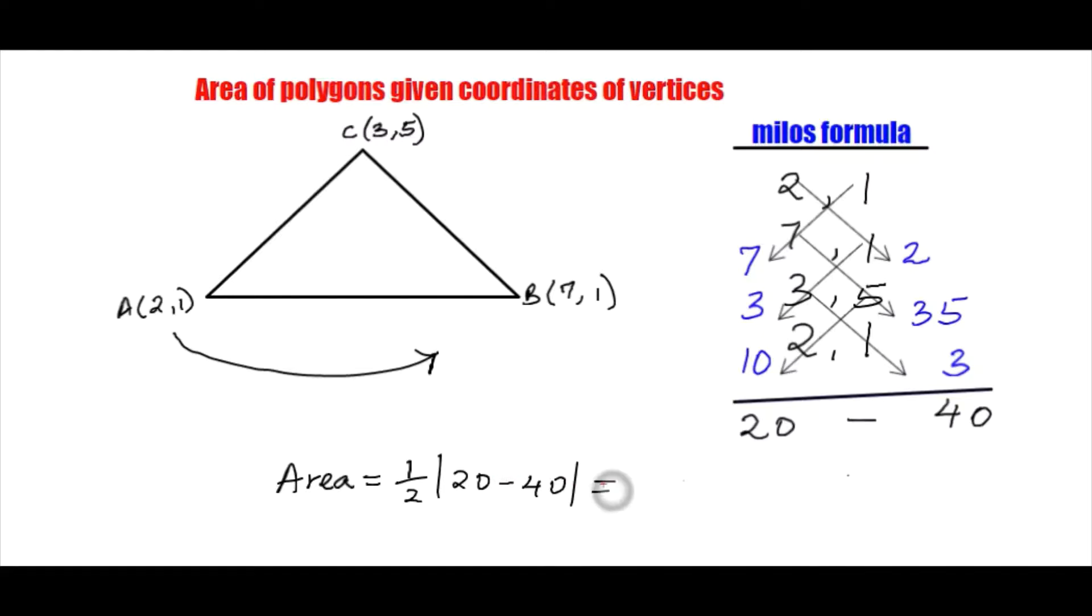So by absolute we mean that we shall ignore the negative on our value, because 20 minus 40 is negative 20. We shall only take it as a positive 20. So this simplified will give us 10 square units.